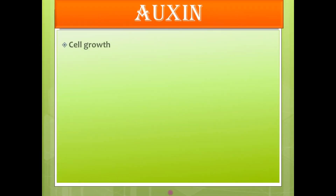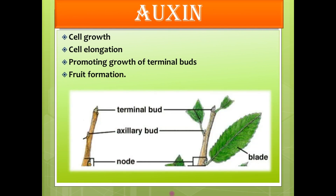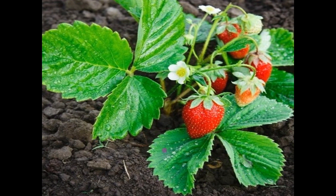The next hormone is auxin. Auxin helps in cell growth, cell elongation, promoting growth of terminal buds, and also helps in fruit formation. Terminal buds are the tip of the plant. Here you can see two different types of plants — one is a tree-like plant having a woody stem with a terminal bud, and the other comes under the category of lower plants such as herb or shrub, which also have a tip called a terminal bud. Auxin also helps in fruit formation along with cell elongation and cell growth.